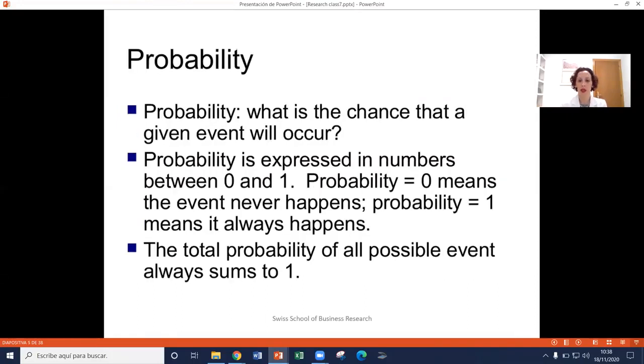The first thing we have to cover is probability. You know what probability? It's the chance that something or a specific situation will occur. Probability is usually expressed by 0 or 1. And 0 means that there is no probability that that will ever happen and probability equals to 1 means it will always happen.